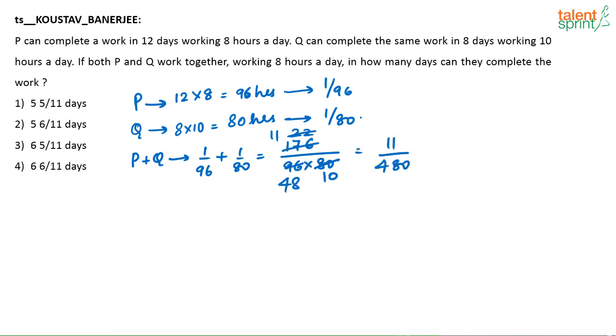Or they will do the work in 480 by 11 hours. The work in 1 hour, they will do so much of the work. In how many hours will they finish the work? They will finish the work in 480 by 11 hours. And P and Q are working together, working for 8 hours in a day. So in how many days will they finish the work? They will finish the work in 60 divided by 11, that is 5 and 5 by 11 days.